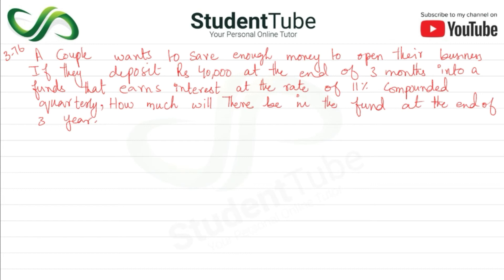Here also we need to find the future value at the end of 3 years. So here also, A is equal to R times [(1 plus r) to the power n minus 1] upon r.